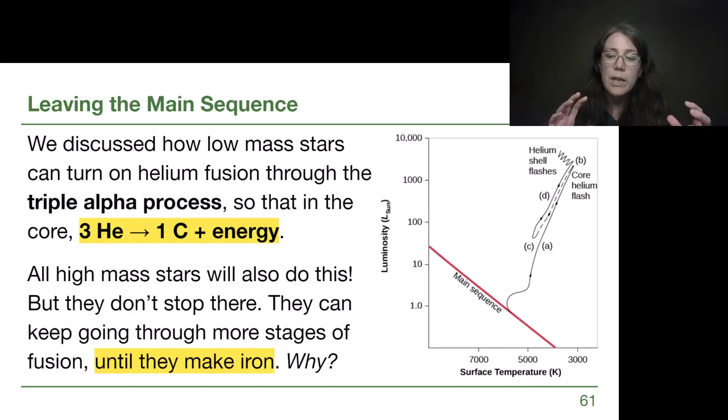We ended last video talking about white dwarfs, but leading up to that we talked about how low mass stars can turn on the triple alpha process so their cores can turn three helium into one carbon with some energy to push back against gravity. High mass stars do this also. They won't have to do it all at once. It's not going to be as instantaneous as this graph for a low mass star suggests.